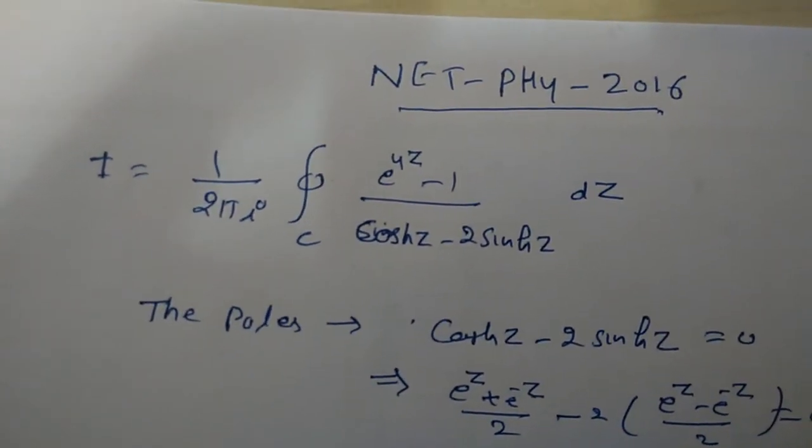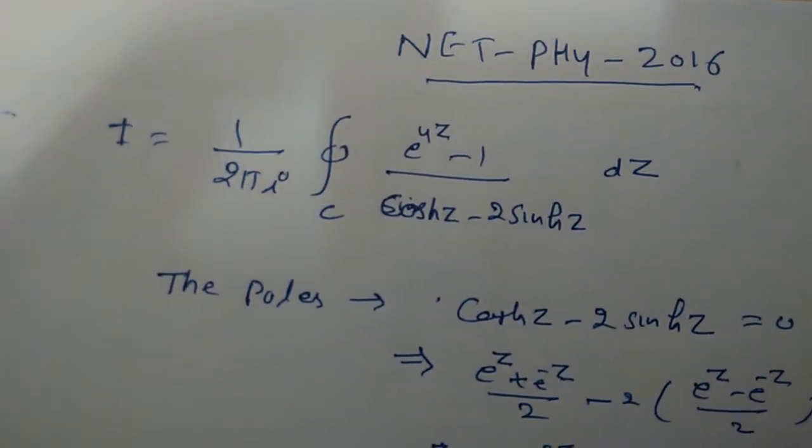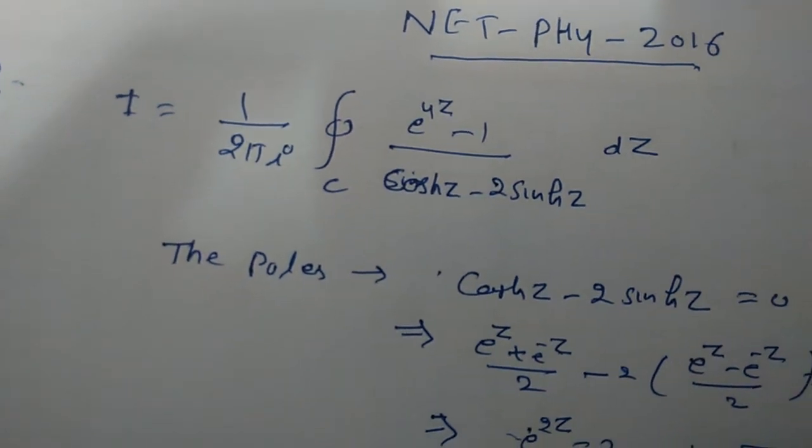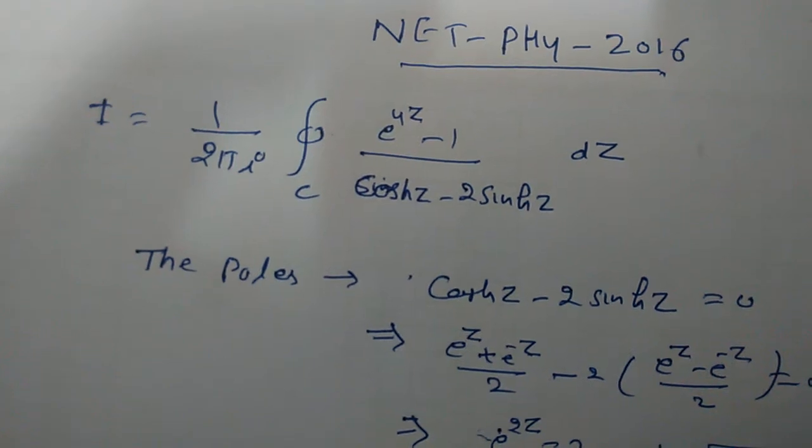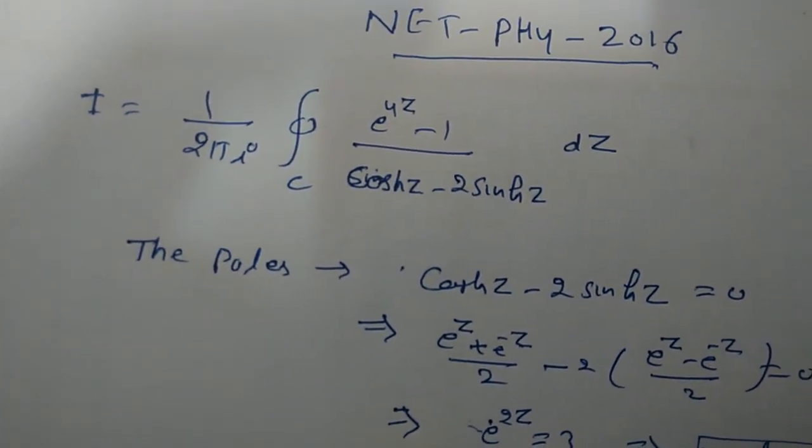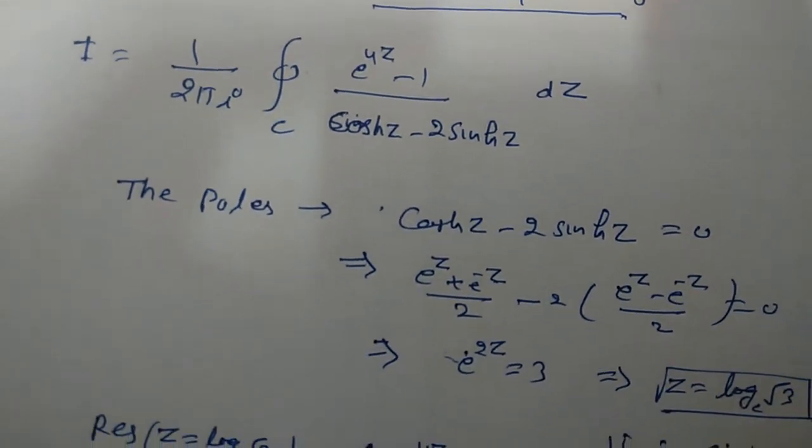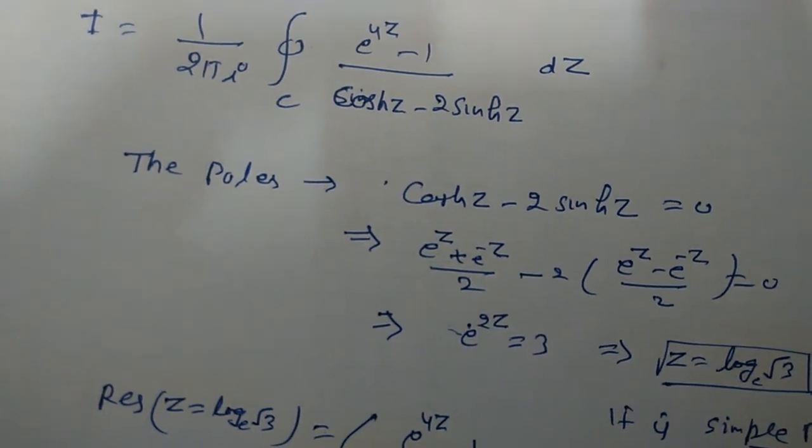NET 2016 question: I = 1/(2πi) times the contour integral around C of (e^(4z) - 1)/(cosh z - 2 sinh z) dz. First, we find the poles. For poles, we put cosh z - 2 sinh z equal to zero.